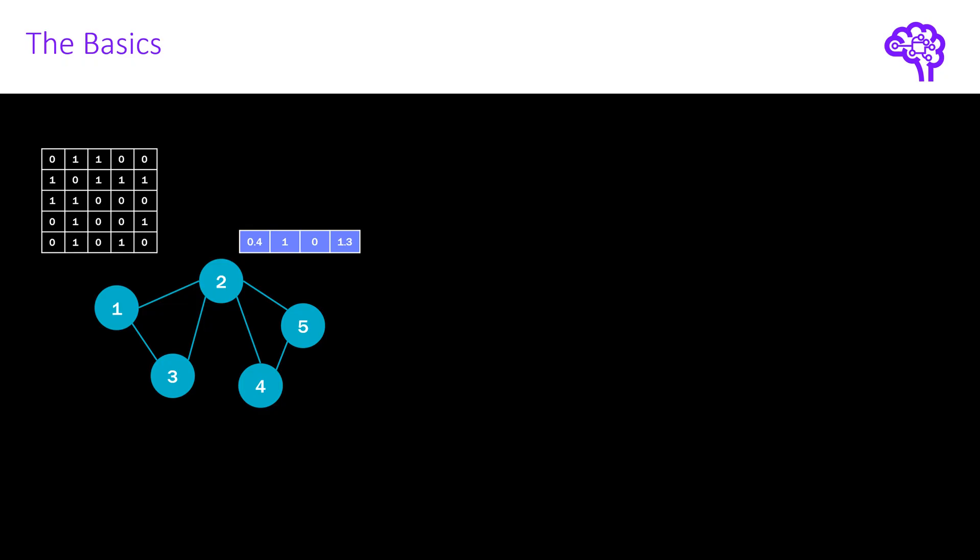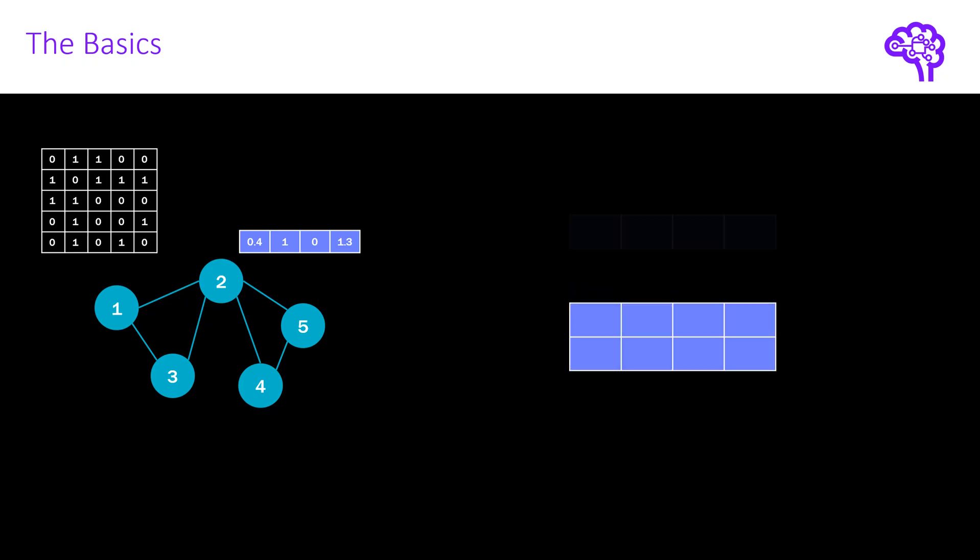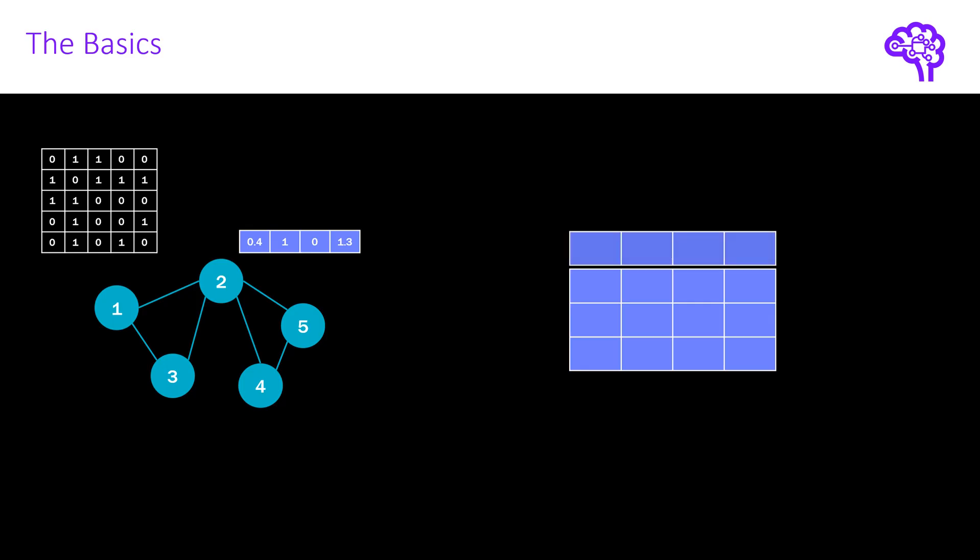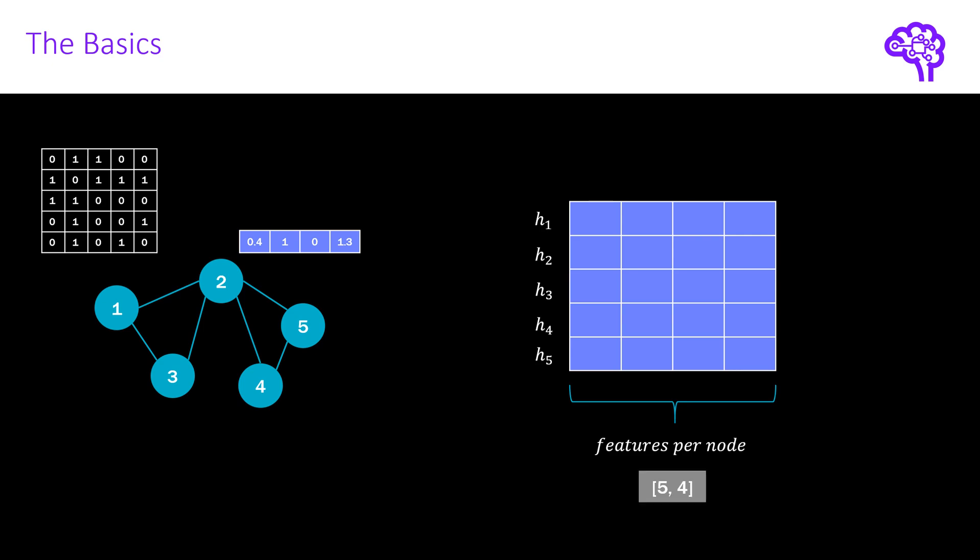This means we stack the node features into a matrix. As you might know, all the neural network calculations are typically performed as matrix multiplications. This is also the case for GNNs, of course. So here we get a dimension of 5 times 4, because we have 5 nodes and each of them has 4 feature values.